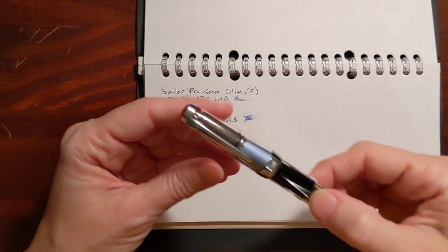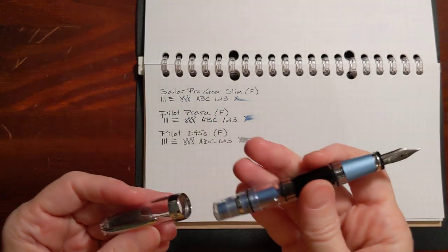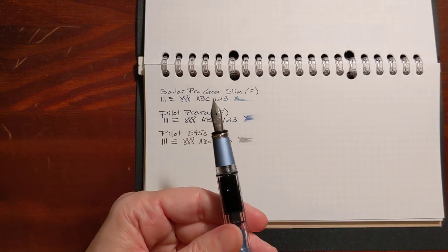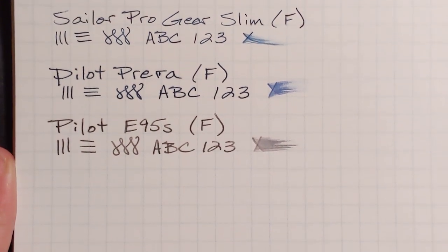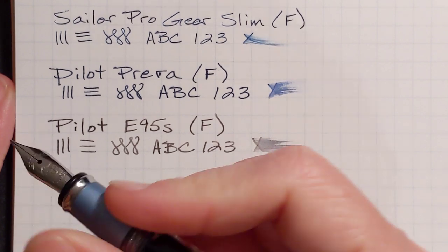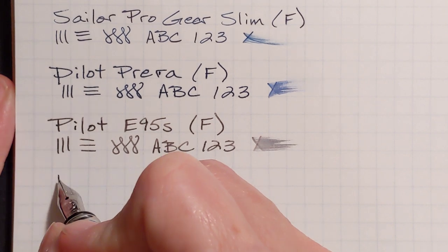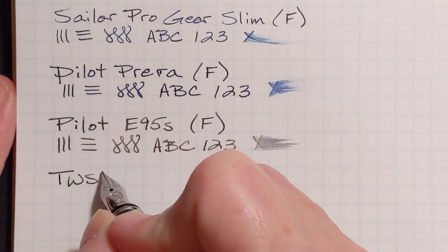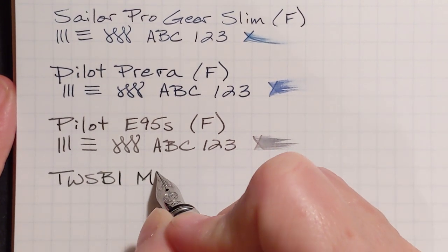The next pen on my list is the TWSBI Mini. Not long ago, this pen I discovered works very well with a dryer ink that I have. I have this inked up with Diamine Earl Grey.